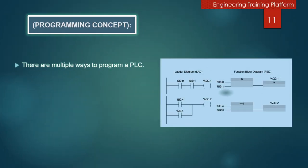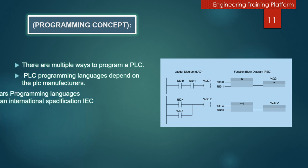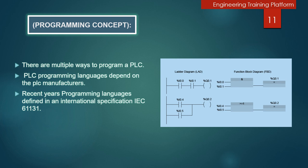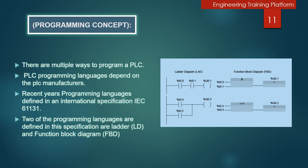For programming concepts, I already described the two languages: ladder logic and function block diagram. Also defined here how the ladder logic converts into function block diagram. There are multiple ways to program a PLC. PLC programming languages depend on the PLC manufacturer. Recent years programming languages are defined in an international specification IEC 61131. Two of the programming languages defined in this specification are ladder logic and function block diagram.